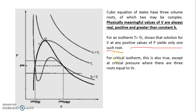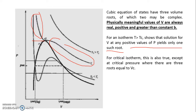For T equal to Tc, throughout most of the region the behavior is similar to T greater than Tc — only one root is real, positive, and greater than b. However, at the critical point where T equals Tc and P equals Pc, there will be three roots that are all real, positive, and greater than b, but fortunately all three roots are equal to Vc. So identifying the root is not a problem for the critical isotherm either.